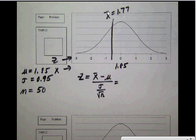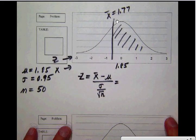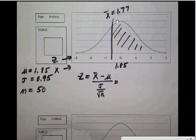x̄ is actually the average of our 50 individual sample items. So what we're going to do is be interested in this area under the curve that is to the right of this 1.77.